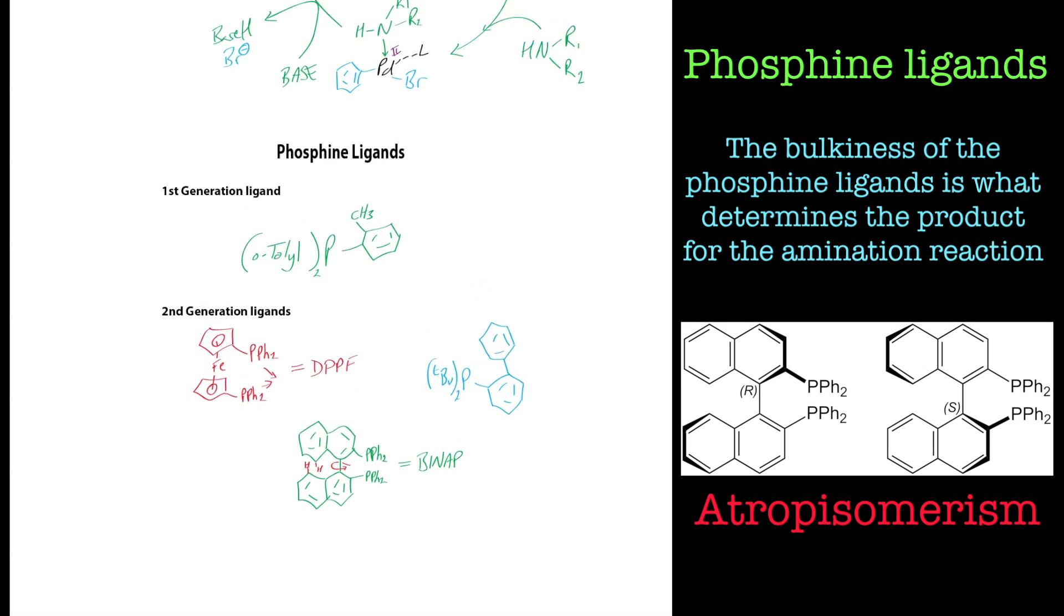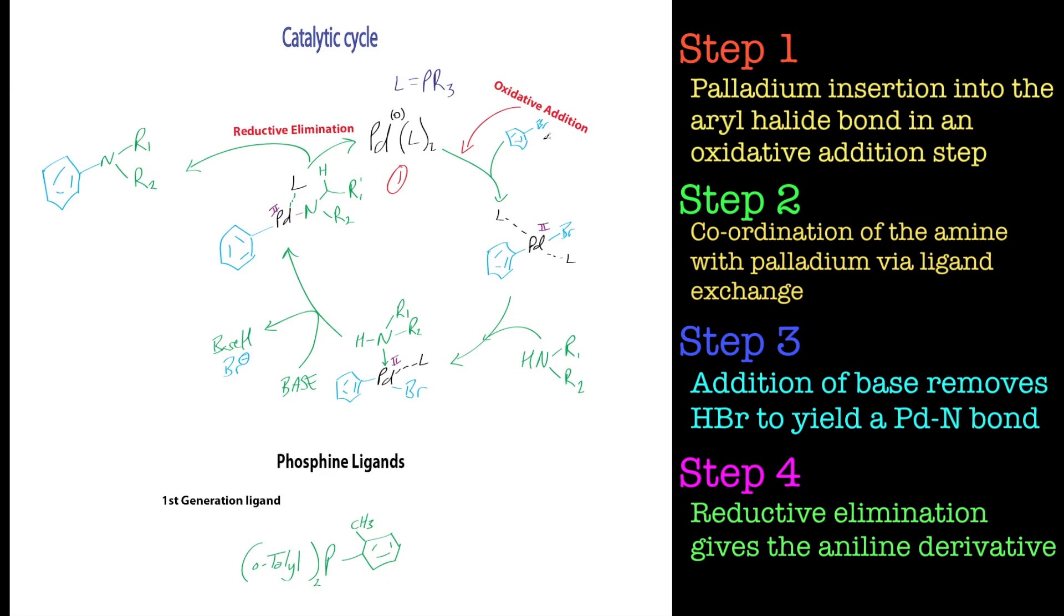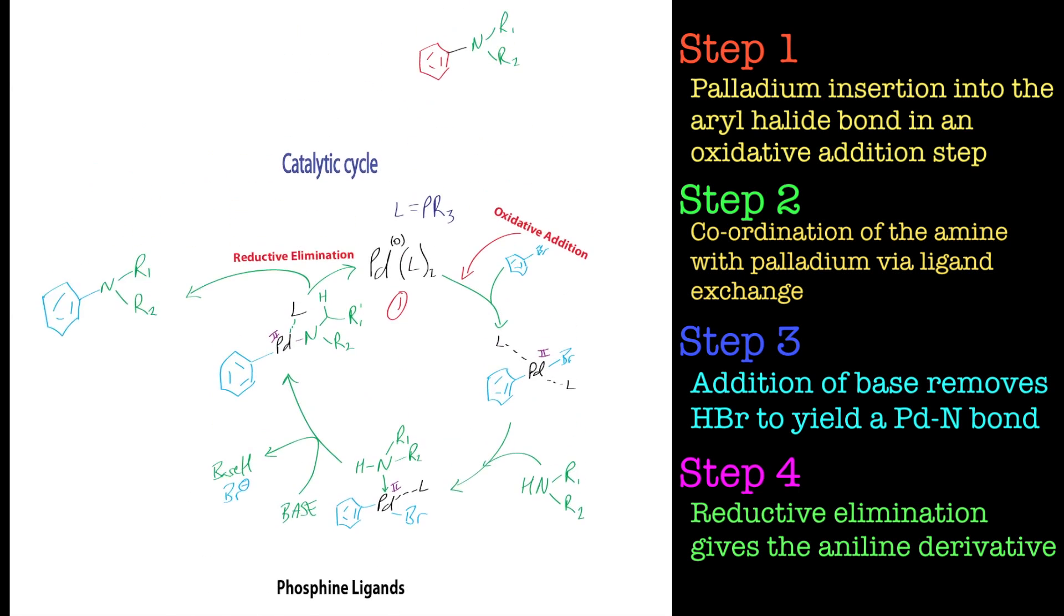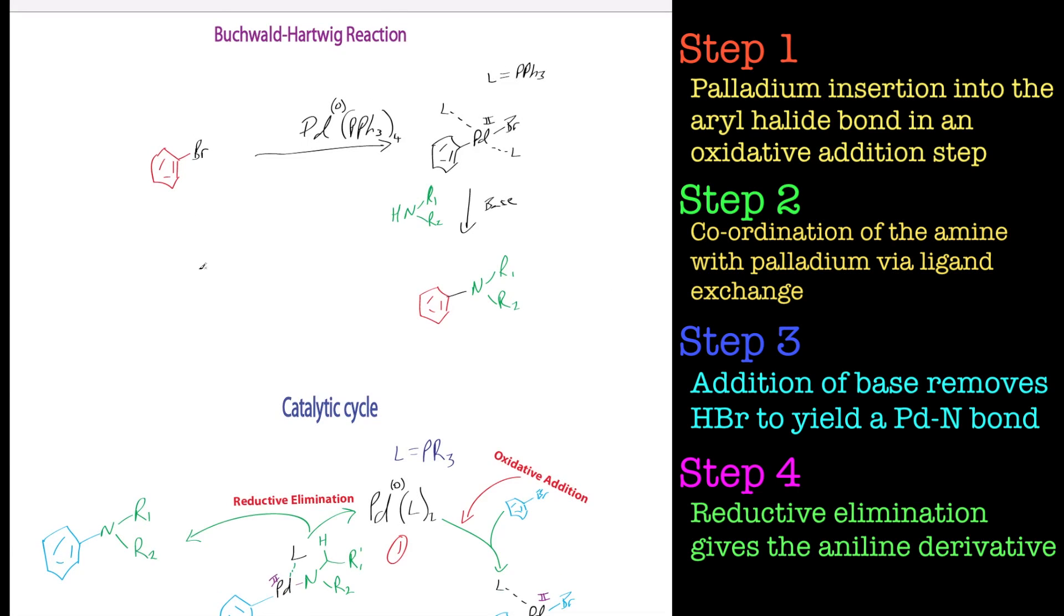So that's basically the Buchwald-Hartwig reaction. There's a catalytic cycle and I'll put that up on the website just so you've got more material to work with than you have with this video. I'll just move that up there. This is basically the basic scheme following the same kind of process as we have for all the organometallic reactions using palladium. So bye for now.